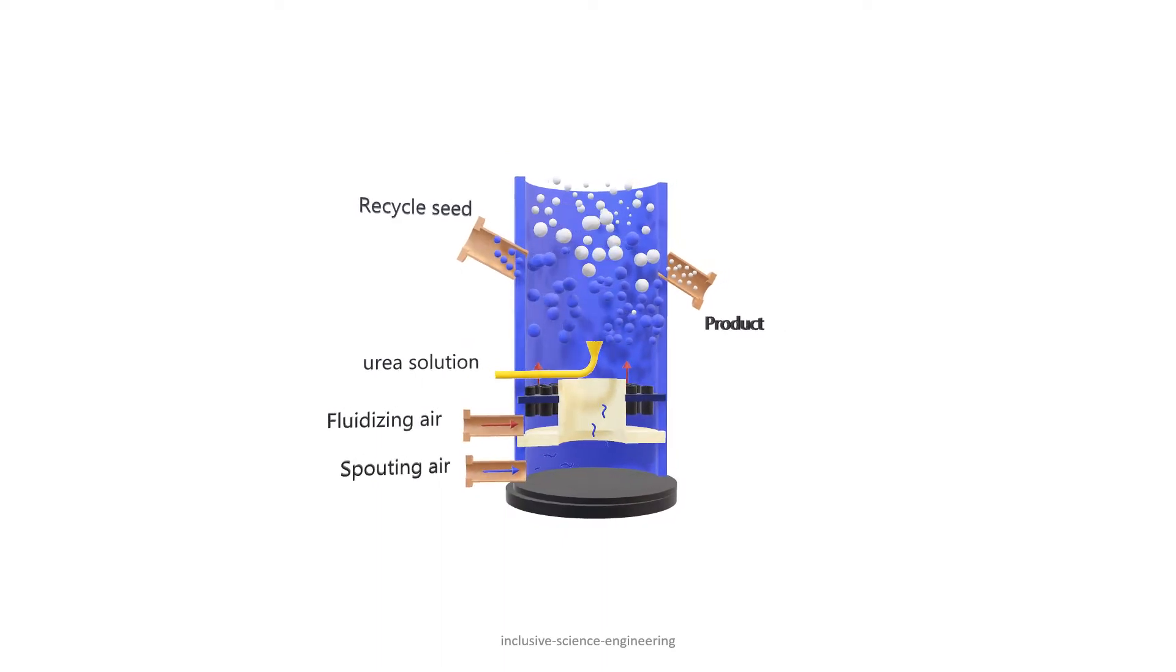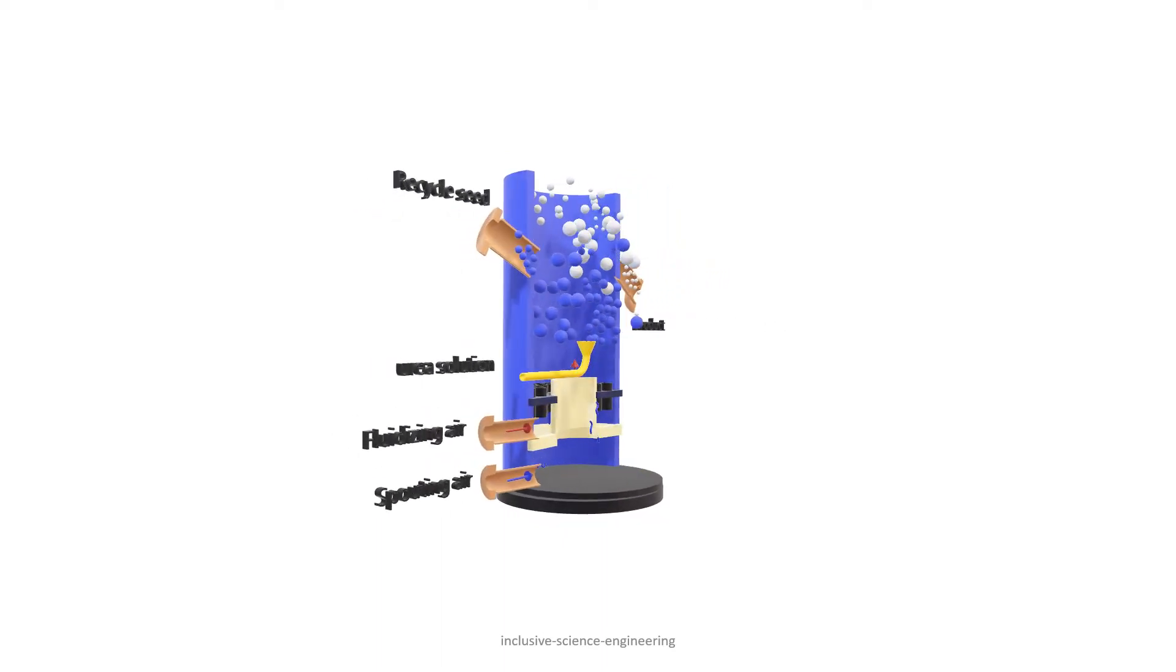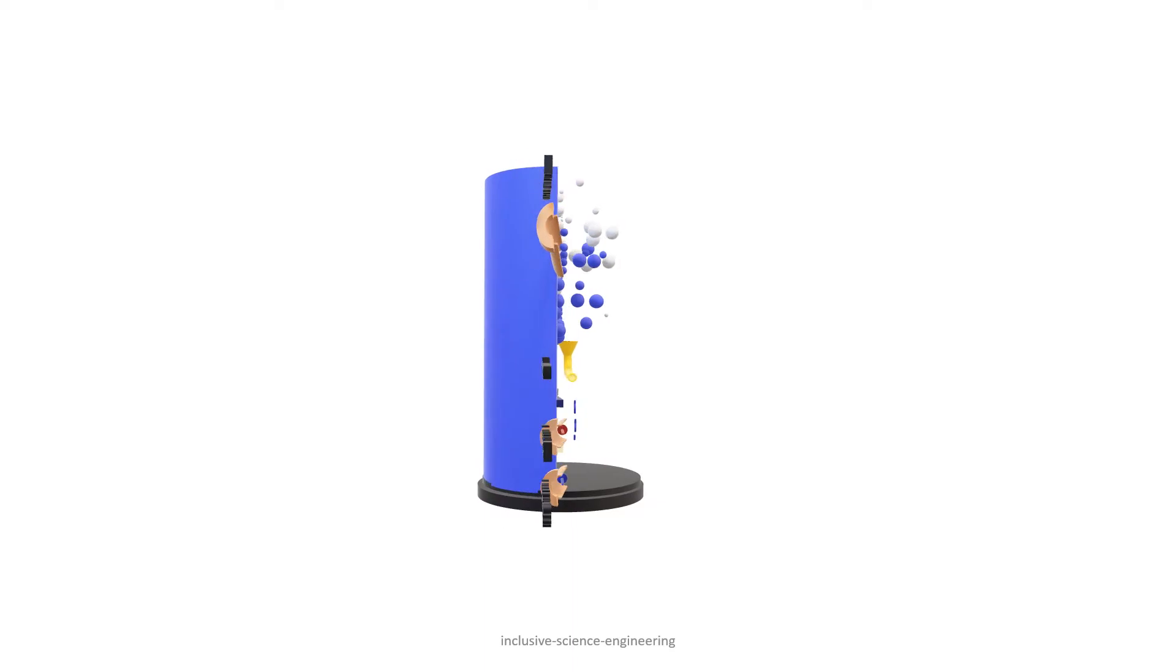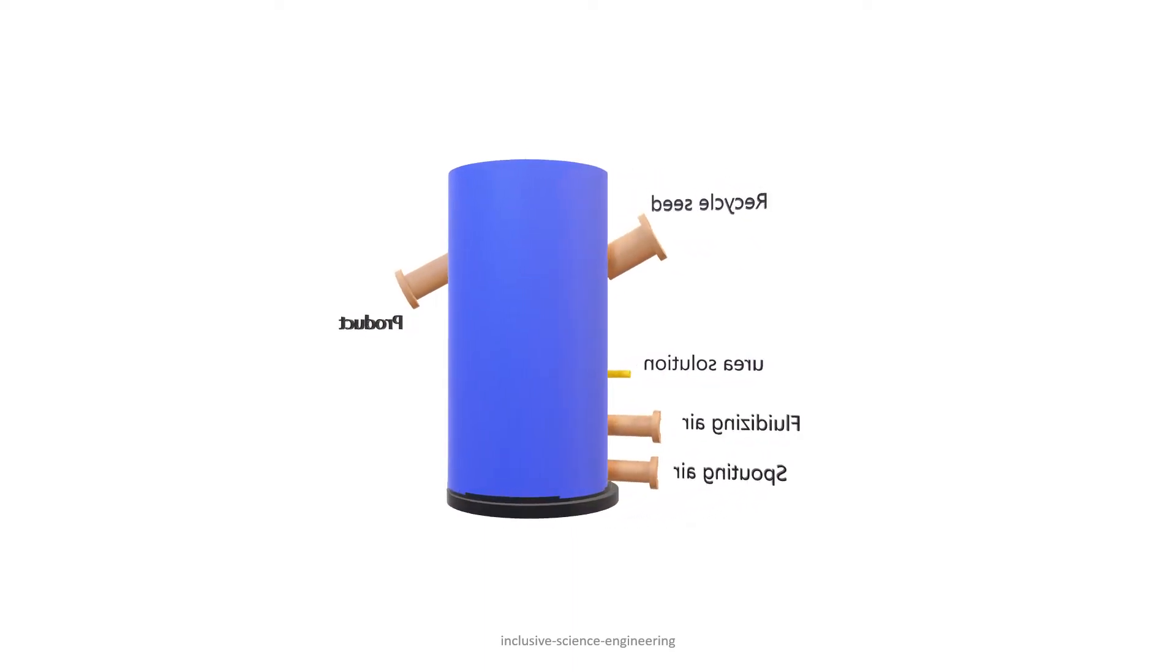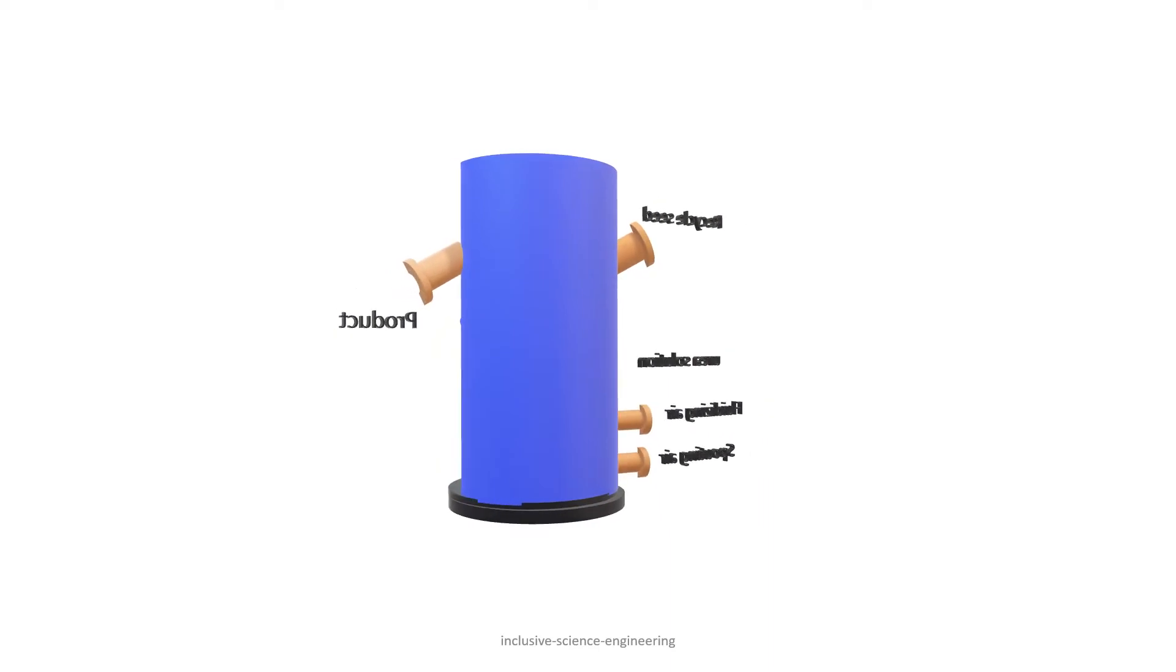At its bottom, the spouting air, fluidizing air, and urea solution feed provisions are provided. The spouting air is narrowed upward towards the top of the vessel. It makes the urea solution dry and form into granules.